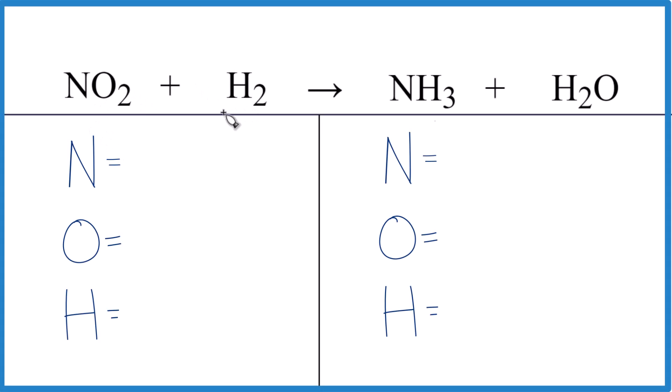Let's take a look and balance this equation. We have NO2 plus H2, we end up with NH3 plus H2O. First we count the atoms up: one nitrogen, two oxygens, and then just two hydrogens. Over here, one nitrogen.